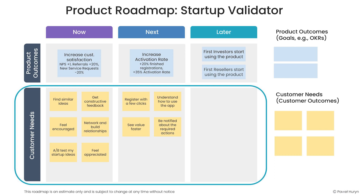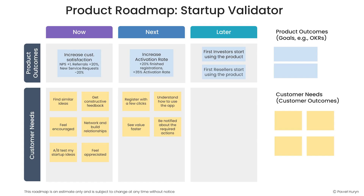Another thing we can see is that we don't have any dates. I like it that way, but in most cases I treat now as the current quarter, next as the next quarter, and later as everything after that. The level of detail also decreases over time. It's not that we've done product discovery for three quarters ahead — we have some ideas for what might be our future goal, some future OKR we'll be working on, but our knowledge about the future is limited.